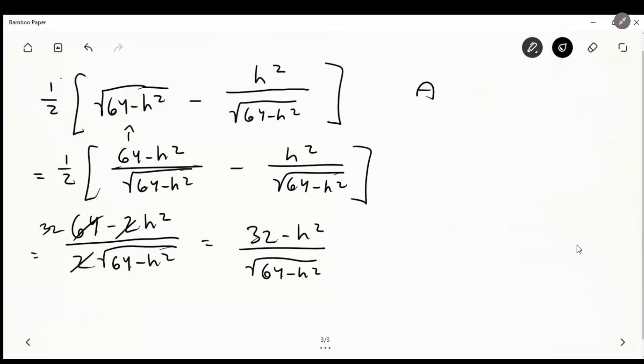So remember in step 2, we wanted to find the roots, or where a prime equals 0. And we know that that's 0 when our numerator is 0. So let's just write 32 equals h squared. You'll find that h equals radical 32. And since this isn't our final answer, let's not even bother simplifying that. Because we're trying to give them the maximum area, not the dimensions.